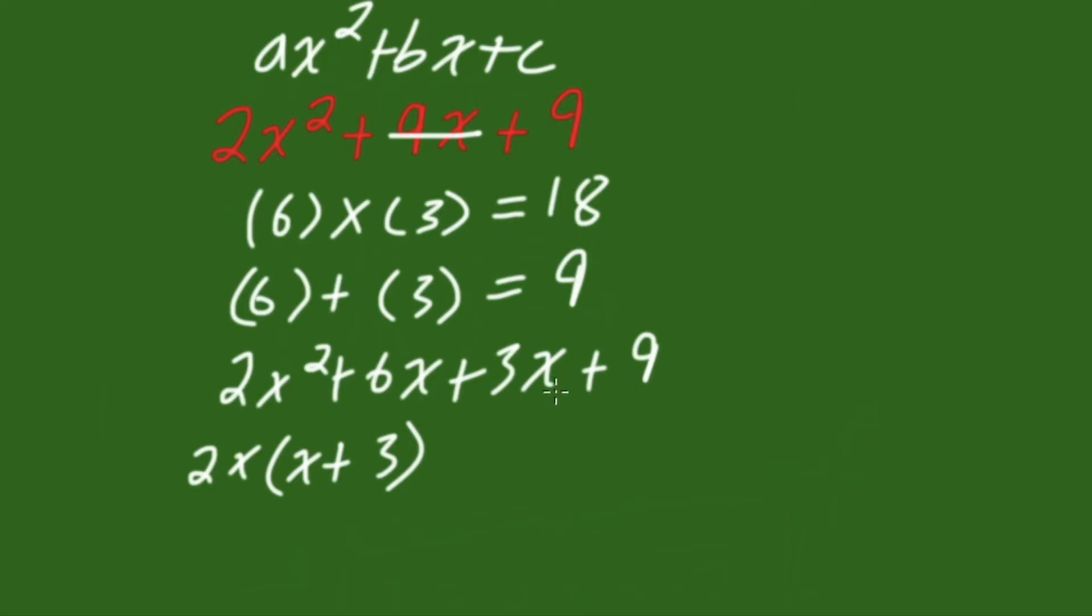And now if we factorize this second section, so 3x plus 9, we can see the greatest common factor is 3. And that goes into 3x, x times, and into 9, 3 times.